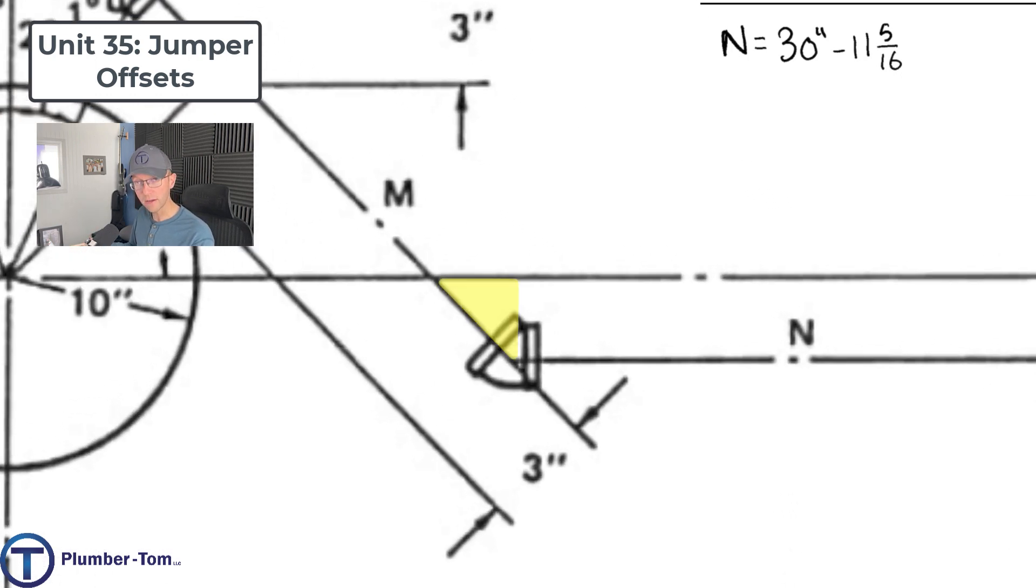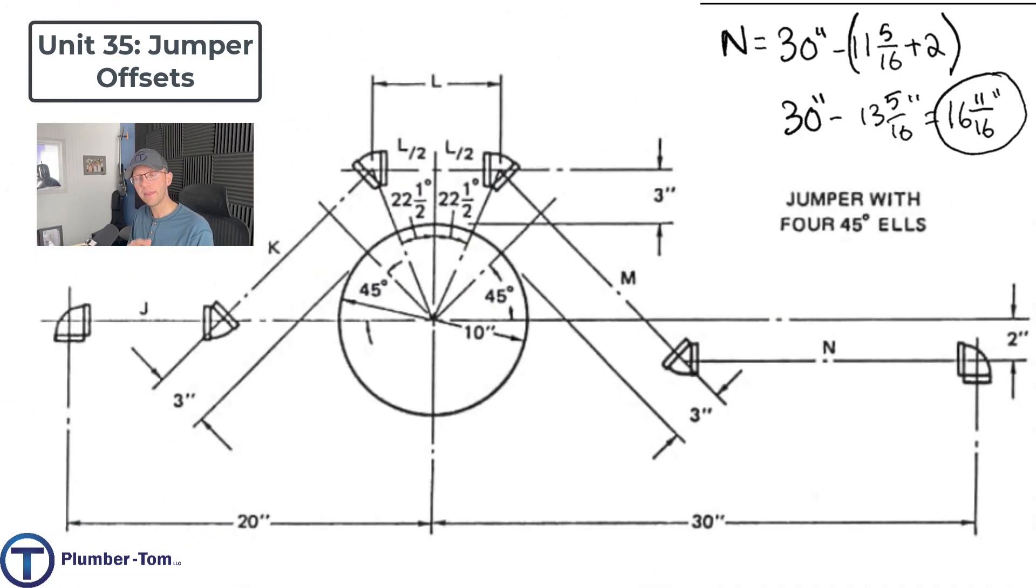But there's also a 2 inch difference from the center line to center line. Zoom in here and we see that triangle. That same right triangle we're always dealing with, 45 degrees. If the one side is 2 inches, that's center to center on our lines, the other side is also 2 inches. And that's the difference that we need to add as we're coming over. It's a simple 2. What I'm going to do is put those in parentheses. The two pieces that we have to subtract, 30 minus 11 and 5 sixteenths plus 2, that's going to be 30 inches minus 13 and 5 sixteenths inches. 30 minus 13 is going to be 17 minus 5 sixteenths. That'll leave us with 16 and 11 sixteenths. And there we have N.